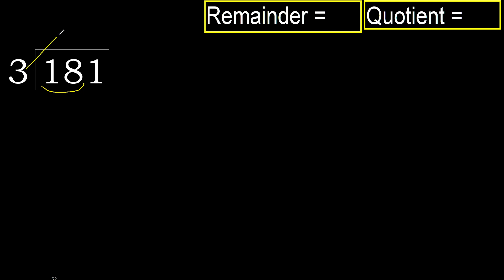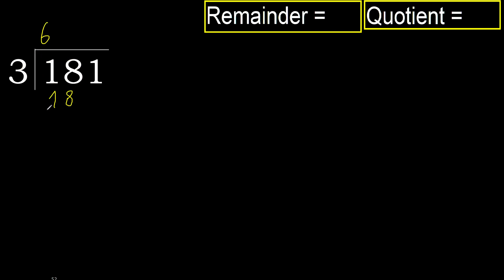3 multiplied by which number is nearest to 18 but not greater? 3 multiplied by 7 is 21. 21 is greater, multiply by 6: 18. 18 is not greater.